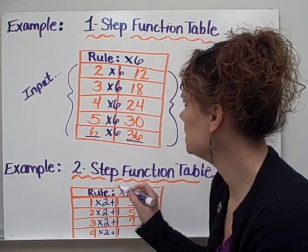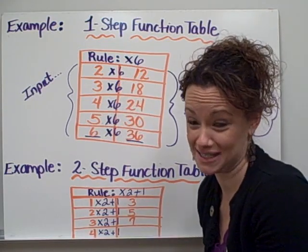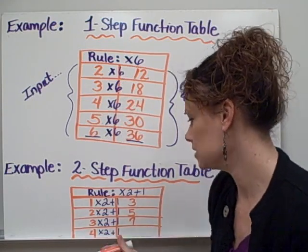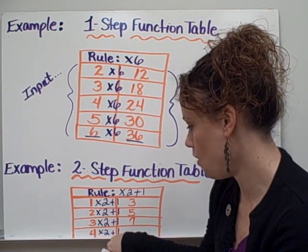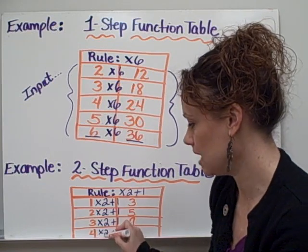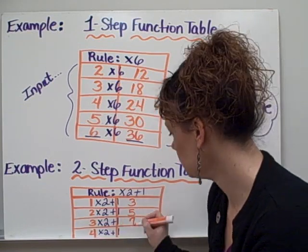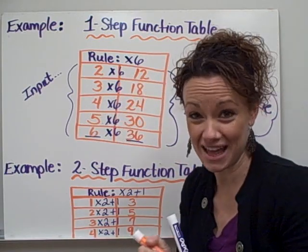So boys and girls, sometimes it's not as simple as just one step. Sometimes you might have to do more than one step. So knowing that times two plus one is the rule, we have four times two plus one. What would my output be for this example? We take four times two, which is eight, plus one gives me nine. And now I've completed that function table.